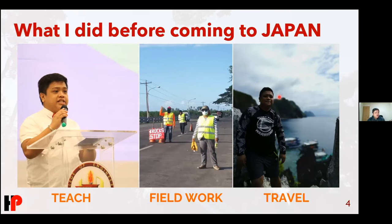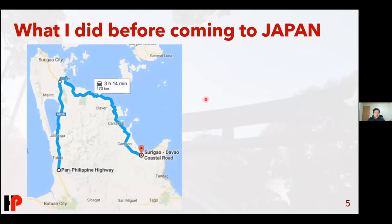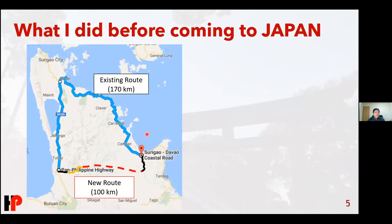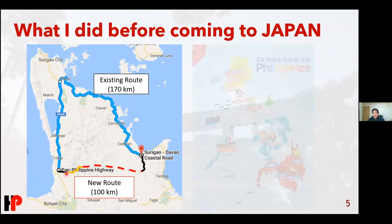The Philippines is known for a lot of good sites, and because of work I was able to travel to different provinces. Here is a province in the Philippines — the current connection between this point and this point takes around three hours. One of our projects is to construct this new road, which is 70 kilometers less than the current route. Why is there no road here now? Because there is a mountain in between. As civil engineers, we try to design and balance the problems with different areas, as well as the need for travel. This kind of work gave me the opportunity to travel all around the Philippines.